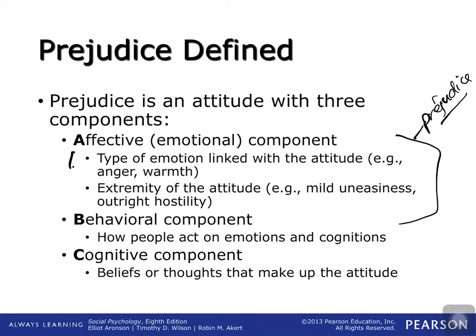The affective or emotional component is where we see the term prejudice. How warm do you feel toward this group? Does this group make you feel angry? Not only the type of emotion, but also how extreme that emotion is. Does a group of people make you mildly uneasy, or do some people make you outright hostile?